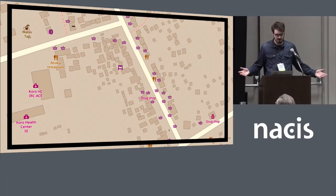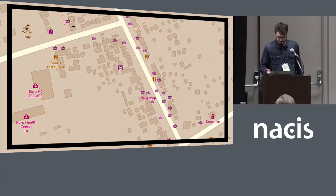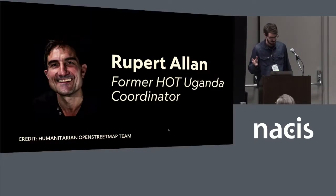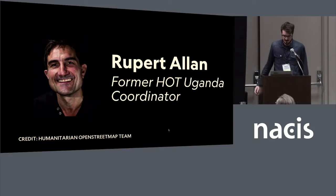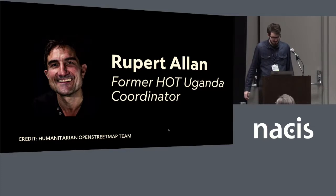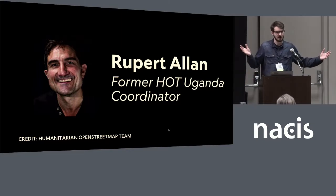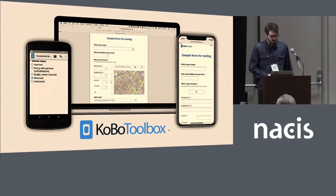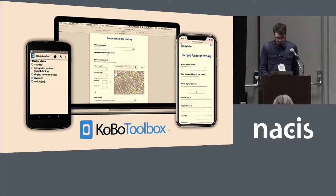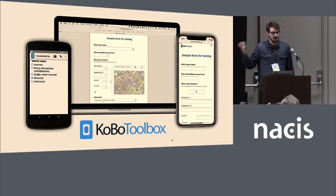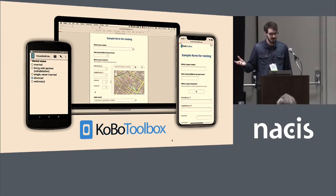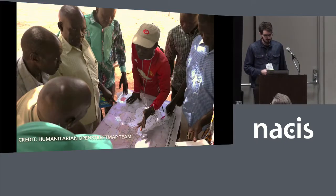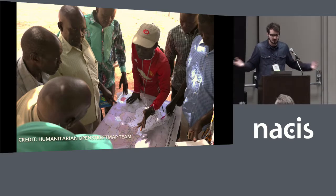I want to tell you about how that's possible and how we told that story in National Geographic. One specific person I want to give a shout-out to is Rupert Allen, the former HOT Uganda coordinator and an amazing source for this story. He told me a lot about what was happening on the ground in long two-hour phone calls. Part of what he was responsible for was setting up the Kobo toolbox — a Kobo server in this area — which allows the creation of surveys to be put on smartphones and then quickly integrated back into OSM. Rupert helped employ and enable local refugees to go out with these surveys and collect huge amounts of data.